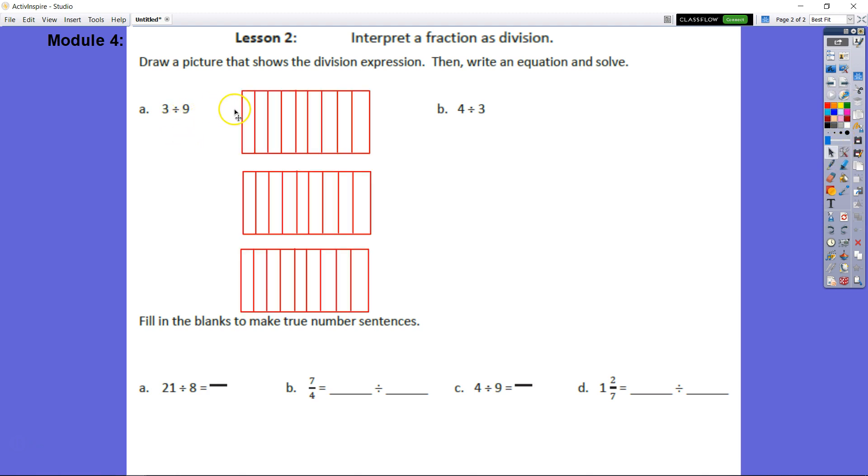Here's our picture. I have 3 items, my 3 rectangles: 1, 2, 3. Each rectangle is split into 9 parts: 1, 2, 3, 4, 5, 6, 7, 8, 9.